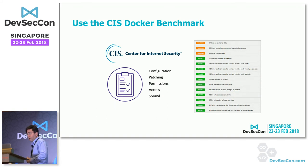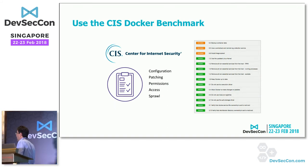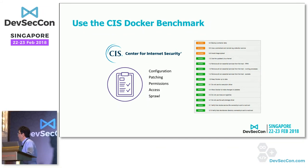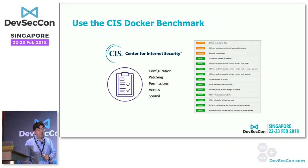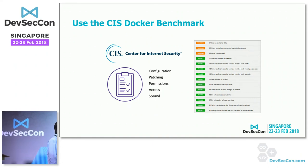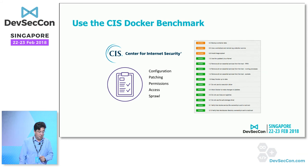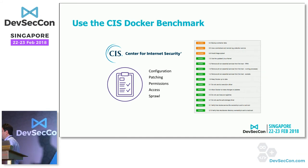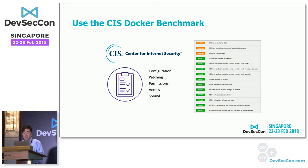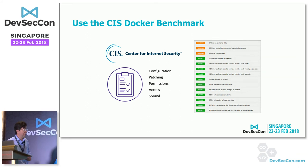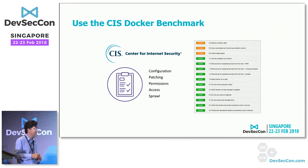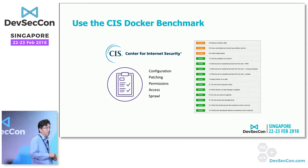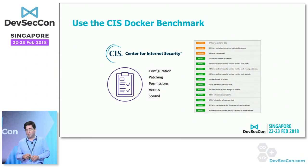One final recommendation: there is a CIS Docker Benchmark you can apply to Docker containers. This is a good way to assess your modern application for vulnerabilities — a sanity check to ensure container images built with Docker are indeed secure. We highly recommend looking at the CIS Docker Benchmark as part of measuring the security of your deployed containerized applications.